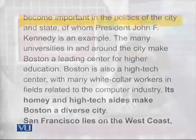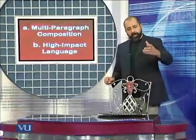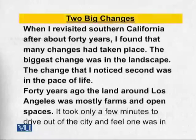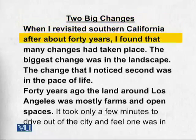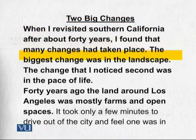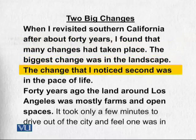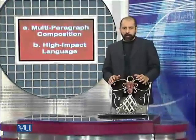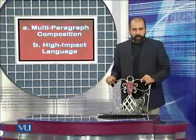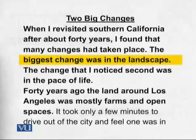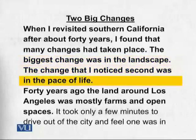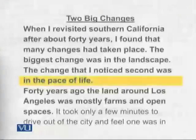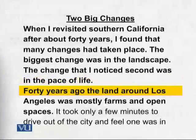In the second paragraph you'll talk about the first city, and in the next paragraph the second city. There are central ideas, supportive details, and closing lines. The whole structure is repeated in each paragraph, then there's a closing. The first paragraph reads: 'When I revisited Southern California after about 40 years, I found that many changes had taken place. The biggest change was in the landscape. The change I noticed second was in the pace of life.'